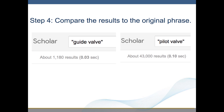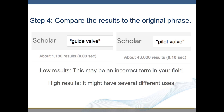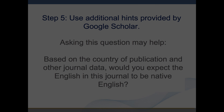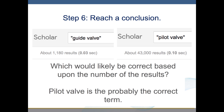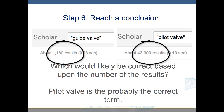Step 4: Compare the results to the original phrase — what number of results were found? If you have low results, this may be an incorrect term in your field. If you have high results, it might have several different uses. Step 5: Use additional hints provided by Google Scholar. Asking this question may help: based on the country of publication and other journal data, would you expect the English in this journal to be native English? Step 6: Reach a conclusion. Between the phrases "guide valve" and "pilot valve," which would likely be correct based upon the number of results?